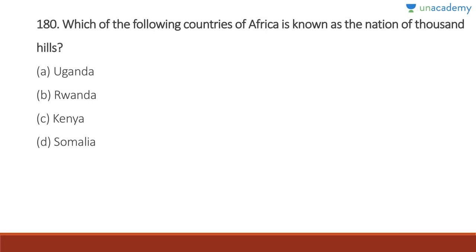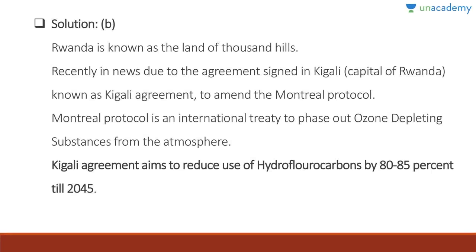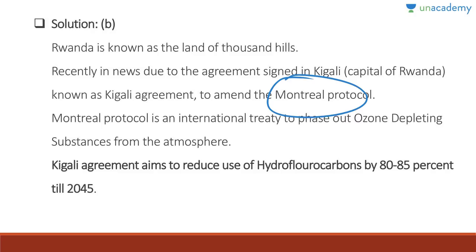Question 180: Rwanda is known as the Land of a Thousand Hills. Answer is B. Rwanda was recently in the news because of the Kigali Agreement — an amendment to the Montreal Protocol — which is an international treaty to phase out ozone-depleting substances. The Kigali Agreement aims to reduce the use of hydrofluorocarbons by 82-85% by 2045.